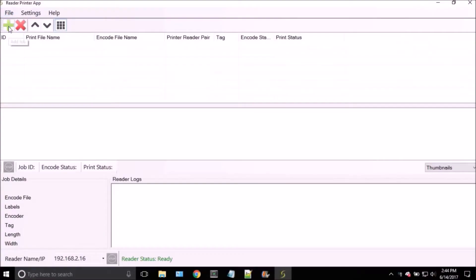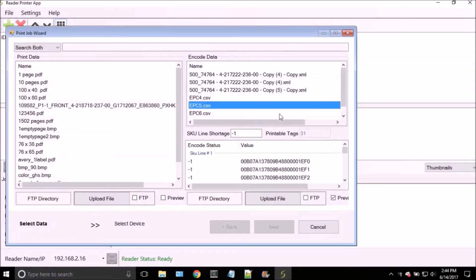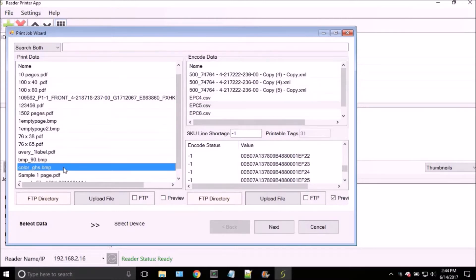Our software allows you to print RFID labels in just two easy steps. Step 1: Select the file with the EPC data you'd like encoded on each RFID tag and a matching print file.